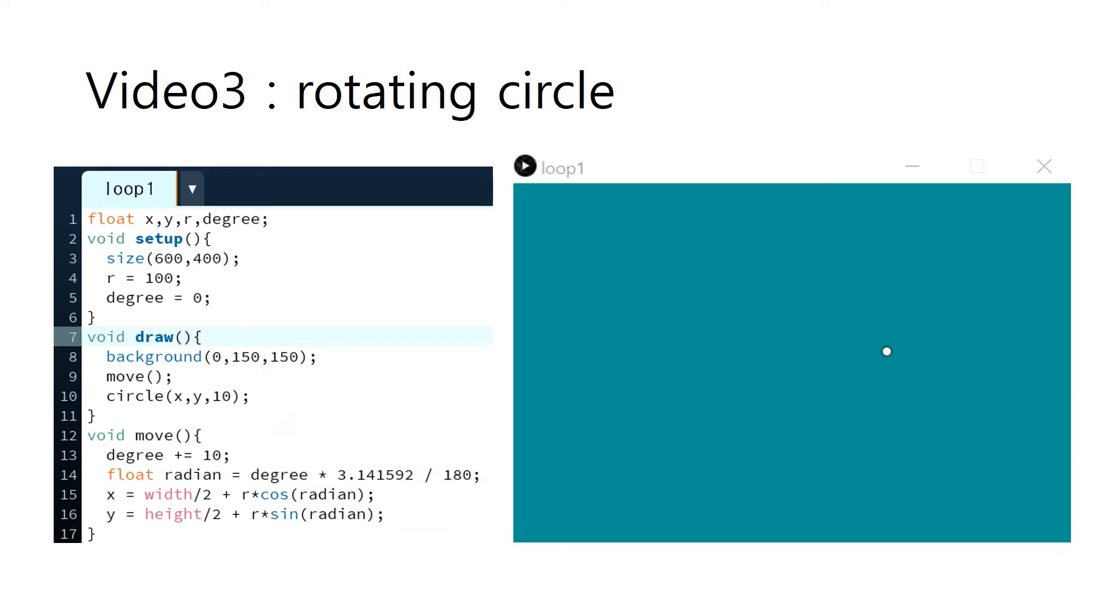In this program, draw a function move. In the move function, sine and cosine functions are used to calculate location on the large circle. We will calculate the location of this small circle every time, and then it looks like a small circle is rotating, spinning around a large circle.